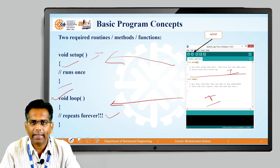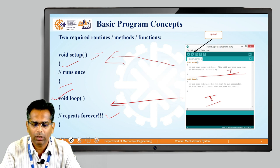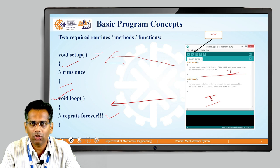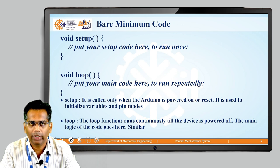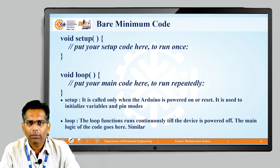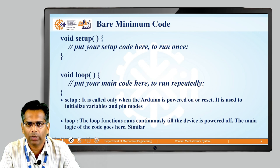After writing the program, click Verify — if no errors occur, click Upload. Whatever program is written will then be executed on the hardware. void setup is the bare minimum code that is required to write. It is called only when the Arduino is powered on or reset. It is used to initialize variables and pin modes.